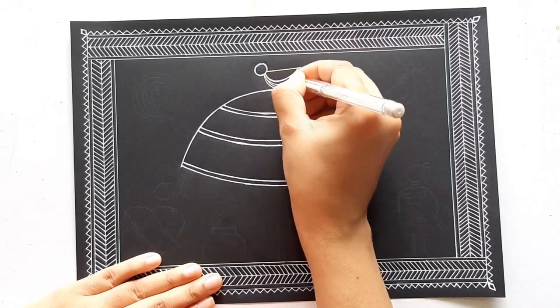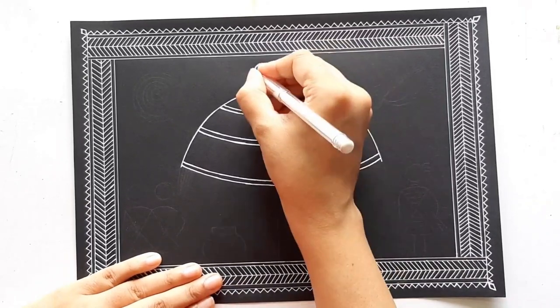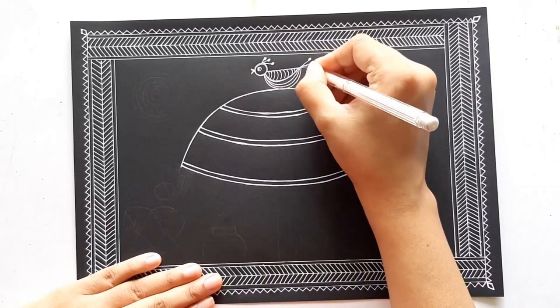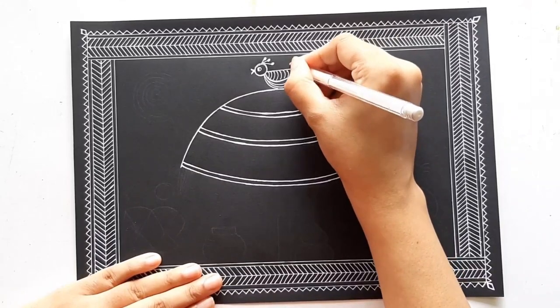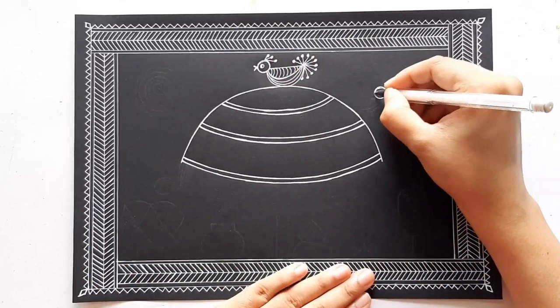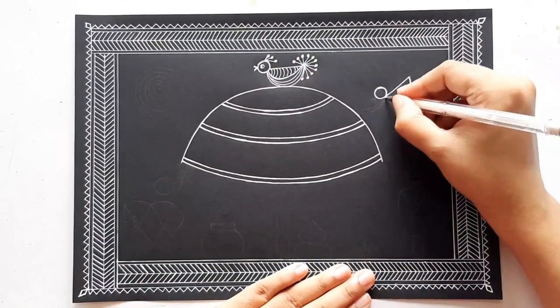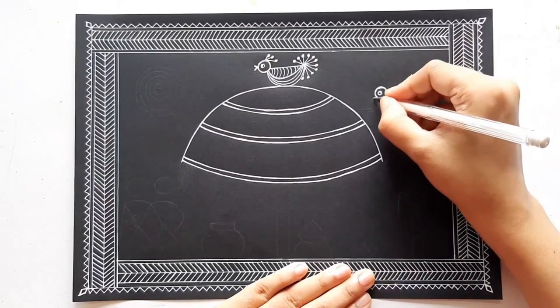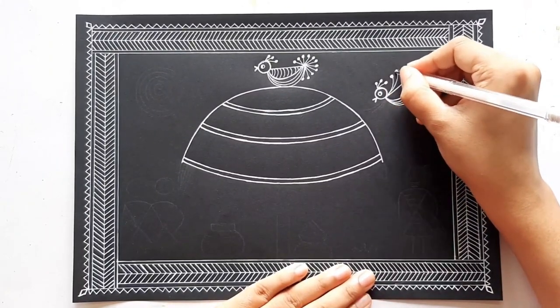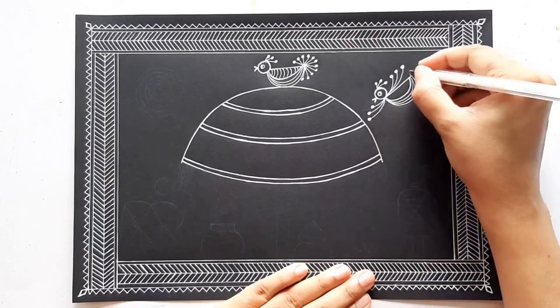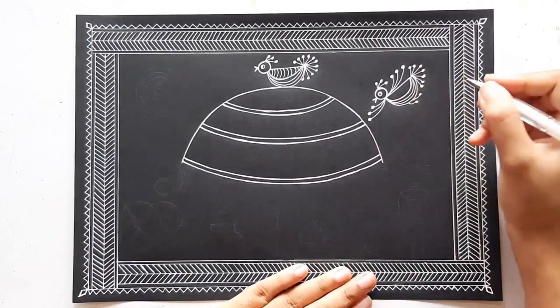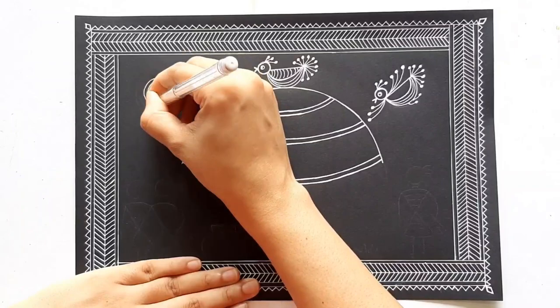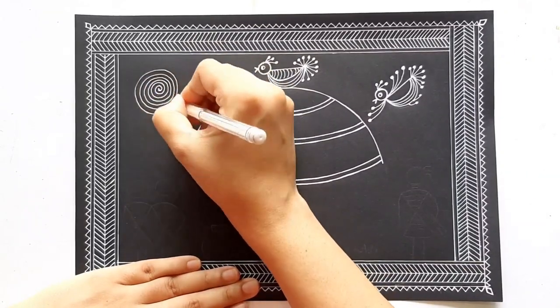I'm adding a small bird sitting on the roof of this hut. The sun is usually depicted in a spiral shape like this.